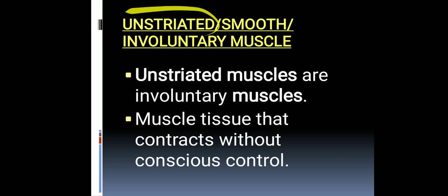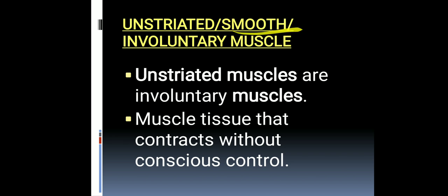Why is it known as un-striated? Because there is no alternate lining of the dark and light bands. Why is it smooth? For the same reason — no alternate lining of dark and light bands. Why is it known as involuntary? Because these muscles will not work under our control. Un-striated muscles are also known as involuntary muscles and will contract without our conscious control.